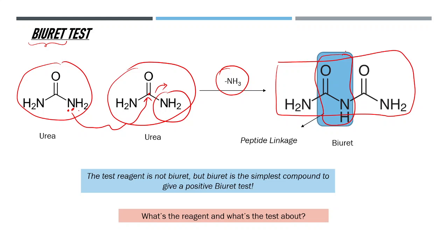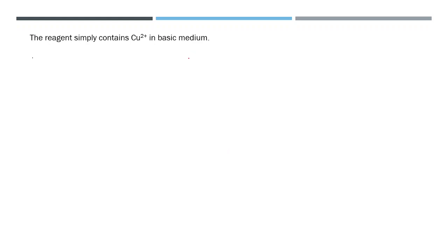The test is named biuret because biuret, which contains a peptide linkage, gives a positive result. The test is not named after the reagent — rather, biuret and any other molecule containing a peptide linkage (dipeptides, tripeptides, proteins) give a positive biuret test. The reagent itself is simply Cu2+ in basic medium.